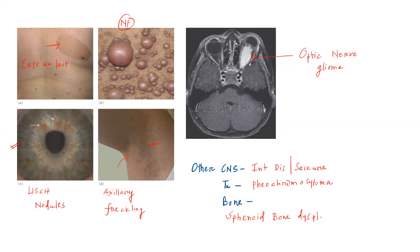So these are all the clinical features of neurofibromatosis type 1: neurofibromas, café-au-lait spots, optic nerve glioma, Lisch nodules, axillary freckling, intellectual disability, seizures, pheochromocytoma, and sphenoid bone dysplasia.